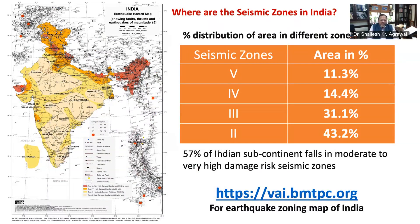Also, for the purpose of urban planning and other development measures, seismic microzonation maps are being prepared, which account for local variations in geology and soil. BMTPC has also prepared vulnerability atlases of India. If you want to have access up to district level regarding seismic zoning, you can visit vai.bmtpc.org and get information up to district level regarding seismic zones of our country.